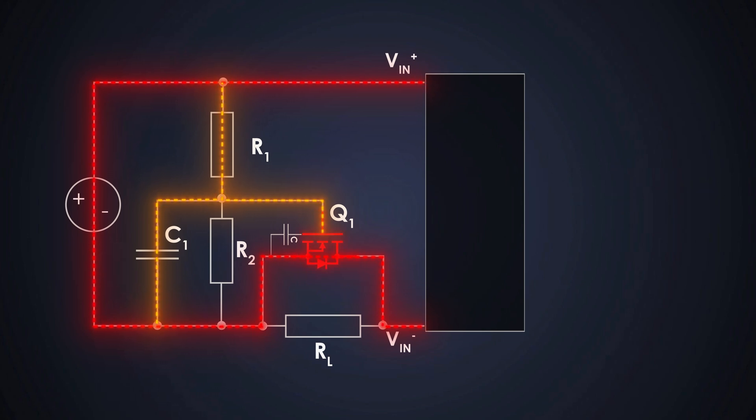The MOSFET Q1 we choose must be able to handle the worst-case input current, especially at the minimum input voltage. It also needs a threshold voltage low enough so that the gate can be fully turned on when the VIN is at its lowest specification. So, we always have to check the VGS threshold and make sure our resistor values give us enough gate voltage.